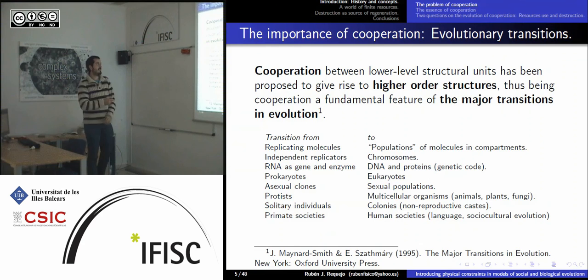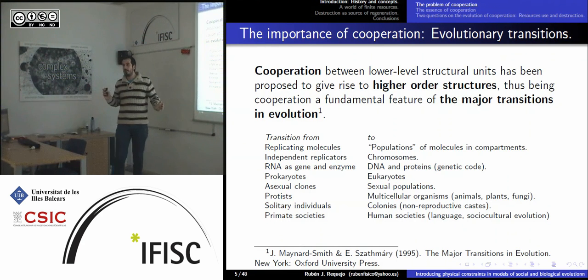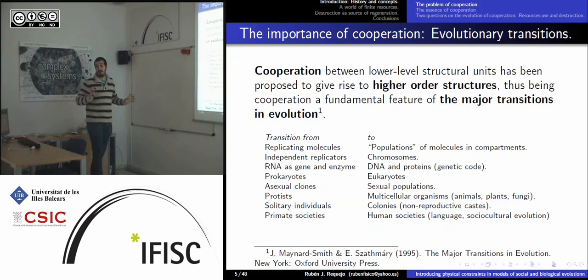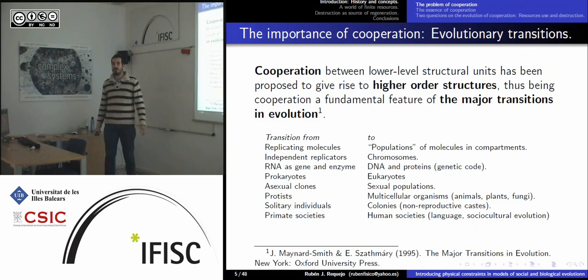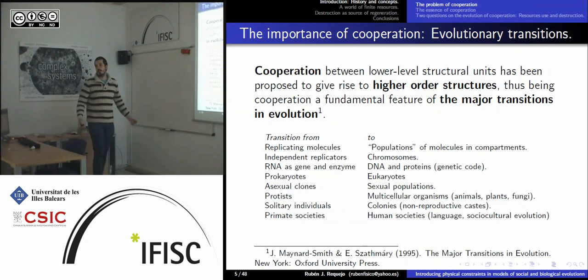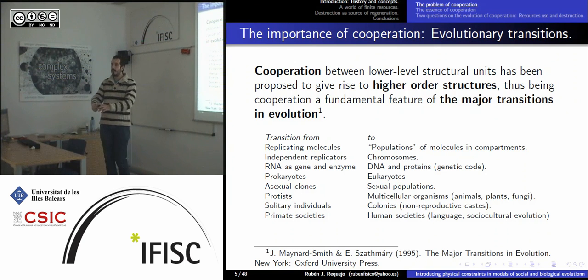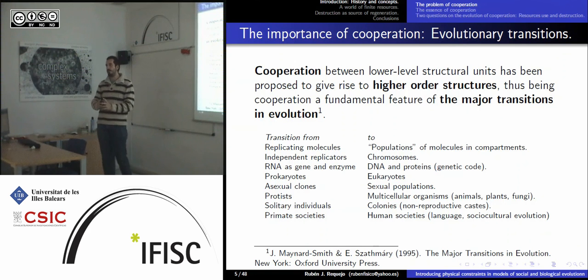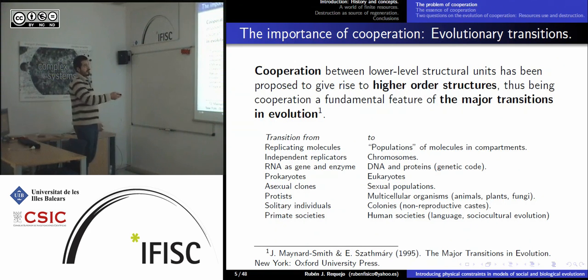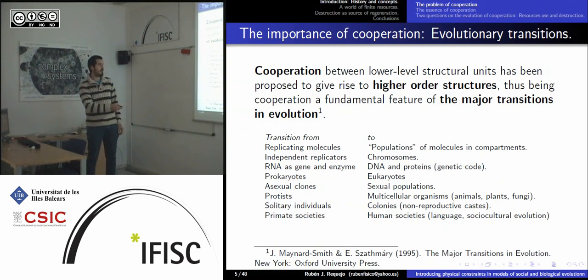Cooperation is considered very important for the creation or emergence of higher-order structures. A typical example is the emergence of multicellularity — what happens when many individuals cooperating create some kind of higher-order structure. Cells have undergone this transition when multicellularity appeared. But cooperation is also important for all other major transitions: from solitary individuals to colonies, or from primate societies to human societies.